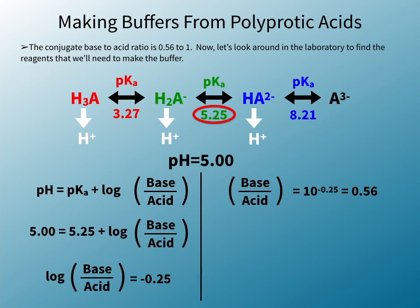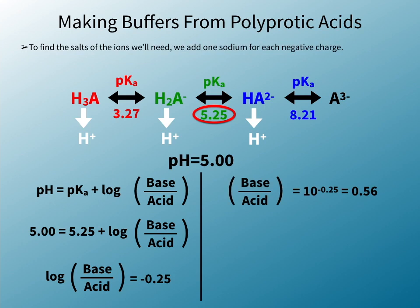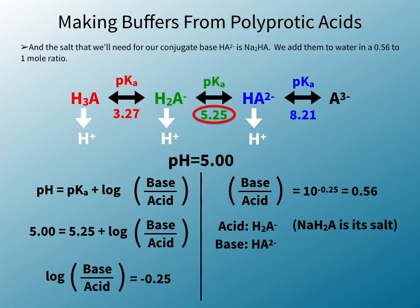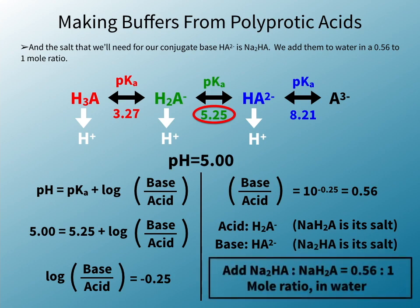Now let's look around in the laboratory to find the reagents that we'll need to make the buffer. To find the salts of the ions we'll need, we add one sodium for each negative charge. The salt that we'll need as a source of H2A⁻ for our acid is sodium H2A, and the salt that we'll need for our conjugate base HA²⁻ is disodium HA. We add them to water in a 0.56 to 1 mole ratio.